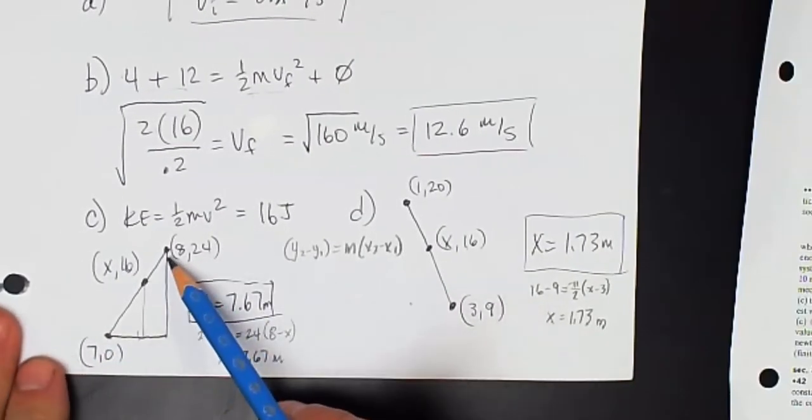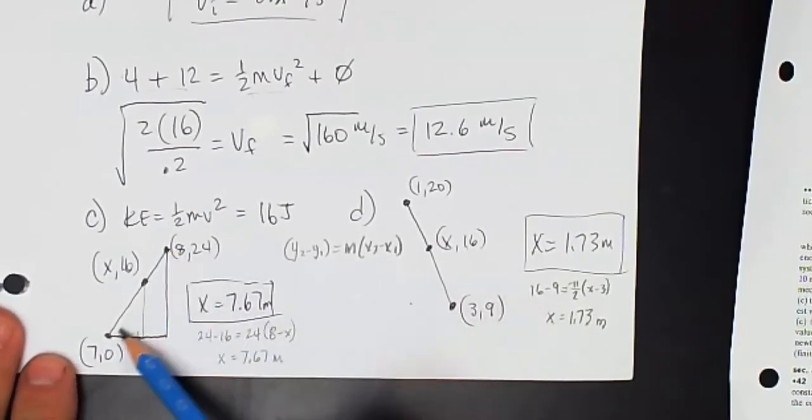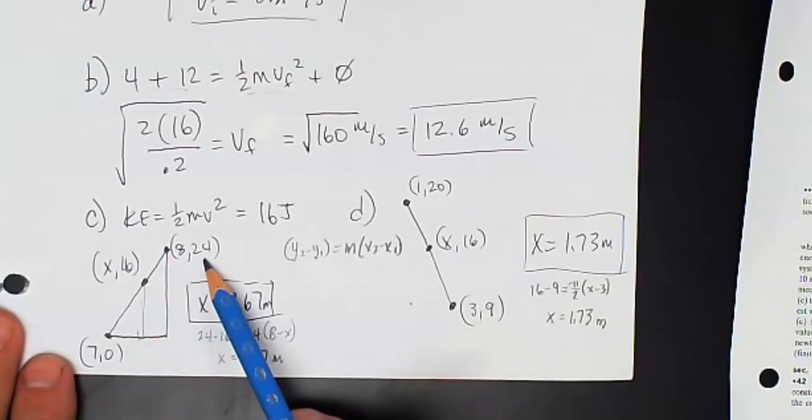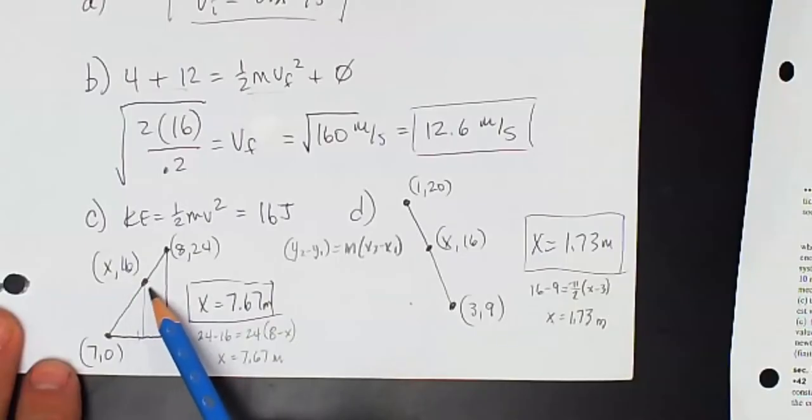I know the endpoints of that straight slanted line, 8, 24 and 7, 0. So now I'm looking for this point right here, x, 16.